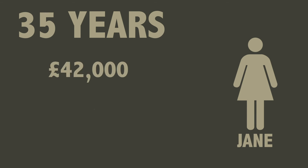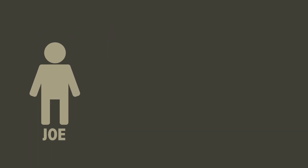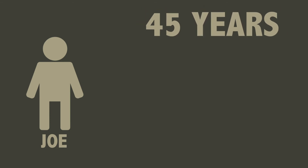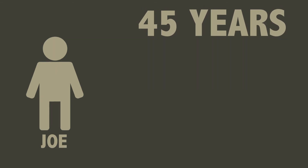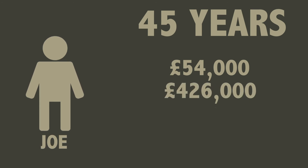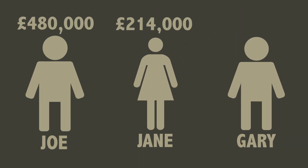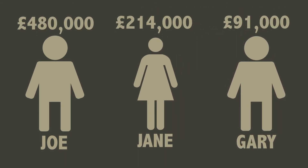Jane, who'd been investing for 35 years, had deposited £42,000 of her own money and gained just over £172,000, bringing her total to around £214,000. Finally, Joe had been investing for 45 years — from the day he started work until the day he retired — he had deposited £54,000 of his own money and gained just over £426,000, bringing his total close to half a million pounds. He has over five times more money than Gary whilst only actually depositing £24,000 more than him.